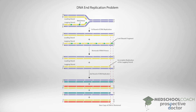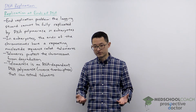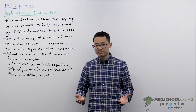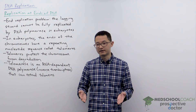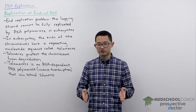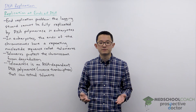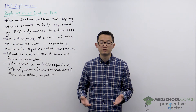This is a problem because the overhang, if nothing is done, will just degrade and the linear chromosome will become shorter by a number of base pairs. Of course, this is going to be a bad thing because if this happens every time DNA replication occurs, the genome is just going to get shorter and shorter, and soon organisms are going to start losing genes.